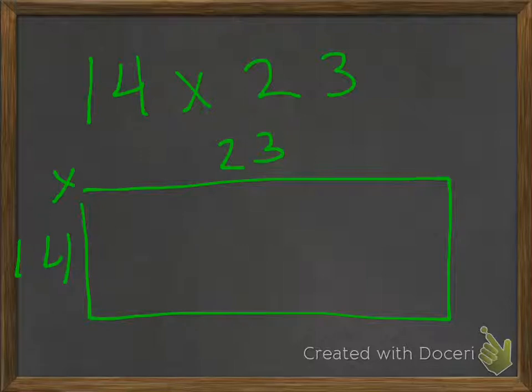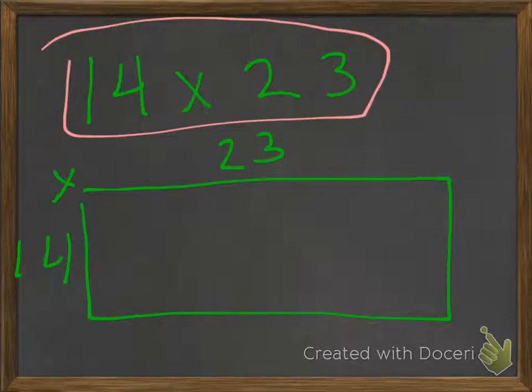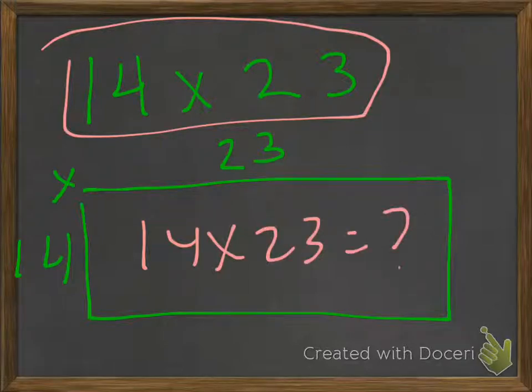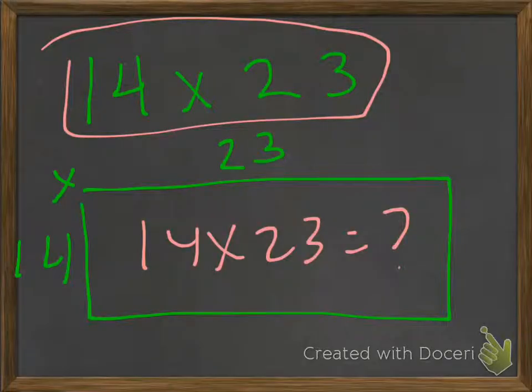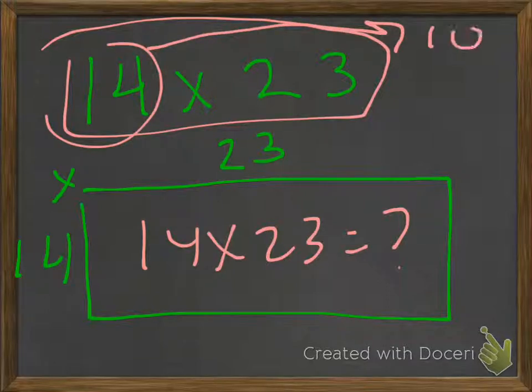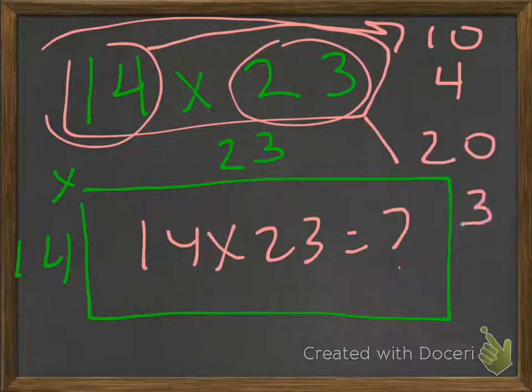Really, what we're going to do is 14 times 23. There's a couple ways of doing this. You could look at it as 14 times 23 and multiply it out using the long algorithm. Or, what if we were to take these numbers? We're going to take 14 and 23 and split it up. So the 14 really becomes 10 and 4, and the 23 becomes 20 and 3.